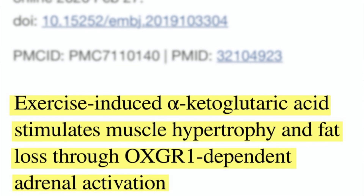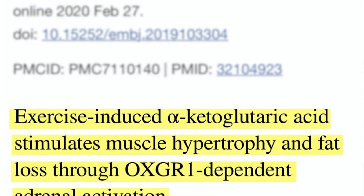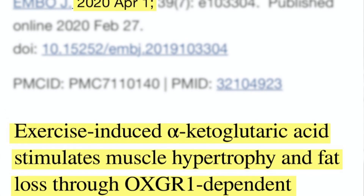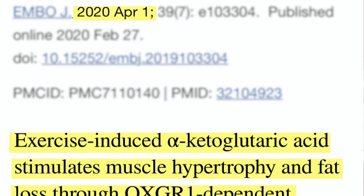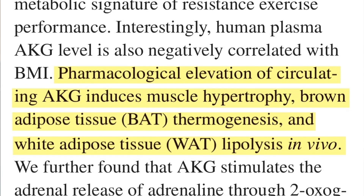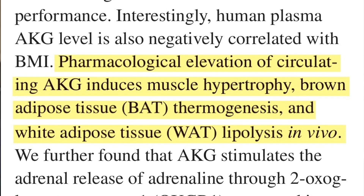Here's one study: 'Exercise-induced alpha-ketoglutaric acid stimulates muscle hypertrophy and fat loss through OXGR1-dependent adrenal activation,' published in 2020. The study in mice showed that AKG induces muscle hypertrophy, brown adipose tissue thermogenesis, and white adipose tissue lipolysis in vivo. OXGR1 is a G-coupled protein receptor that triggers a response for reprogramming in parent cells — cells that can divide and produce brand new cells. Additionally, it plays a role in stem cell differentiation and stem cell reprogramming, where a stem cell can literally become any type of cell in the body.